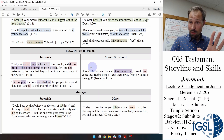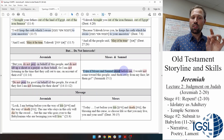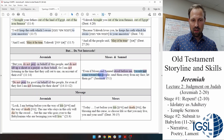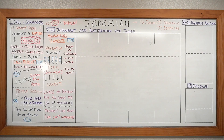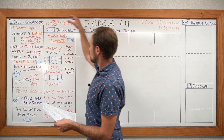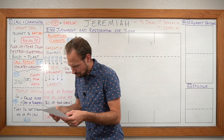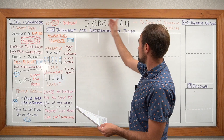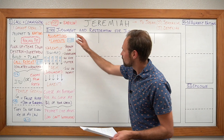Key moment in Jeremiah 15: 'Even if Moses and Samuel stood before me and interceded for this people, I would not come toward them.' There is no amount of prayer from the most righteous person imaginable that will avert the destruction coming on Jerusalem because of their sins. Therefore, the word of the Lord which Jeremiah is commissioned to speak to Judah is nothing but judgment, judgment, judgment.